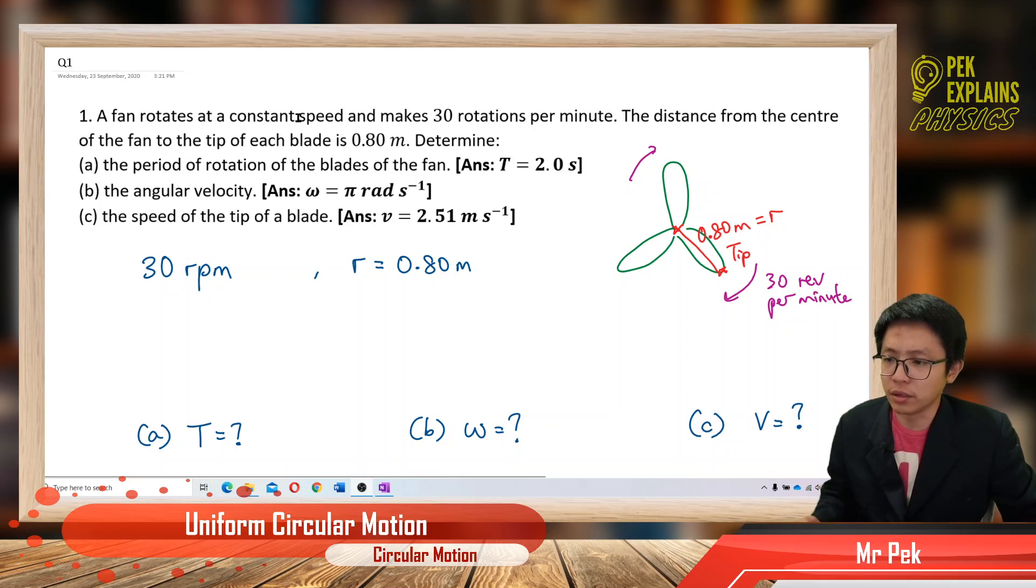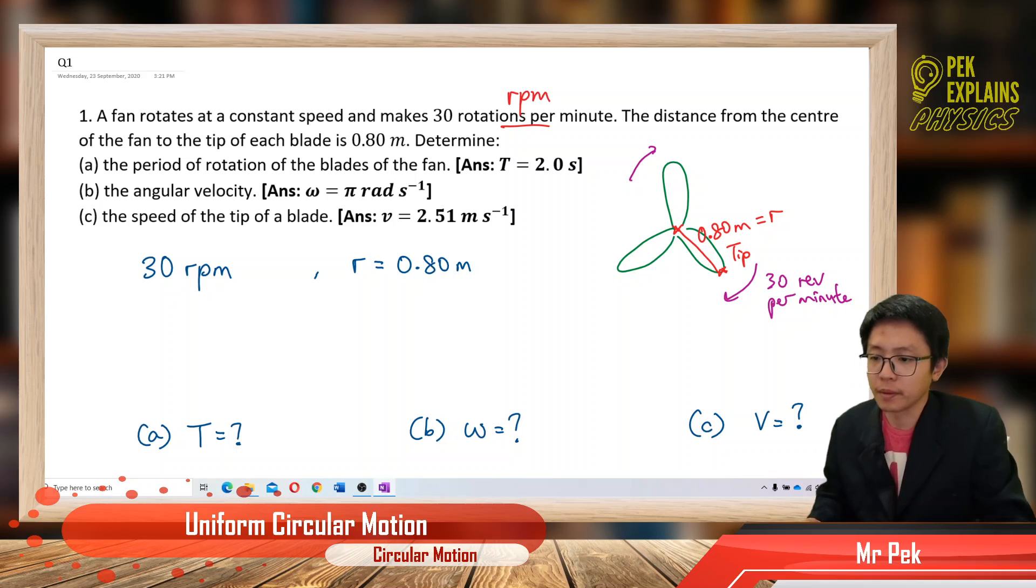Let us read the question together. A fan rotates at a constant speed and makes 30 rotations per minute. So this is the speed, rotation per minute is RPM.